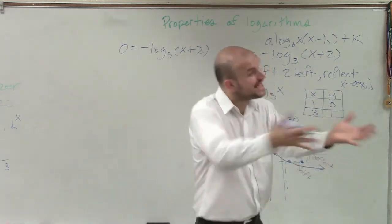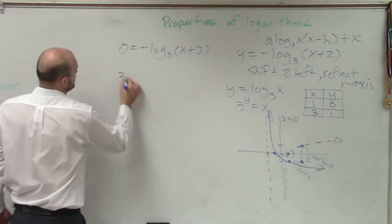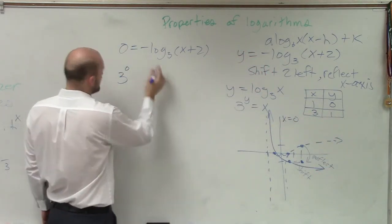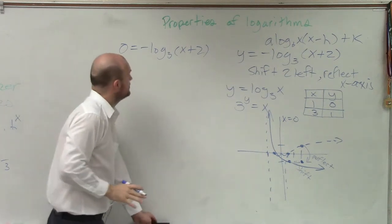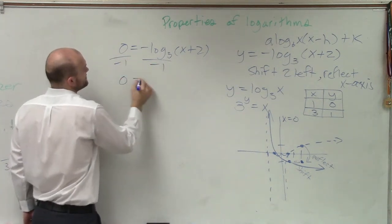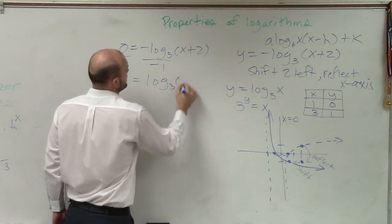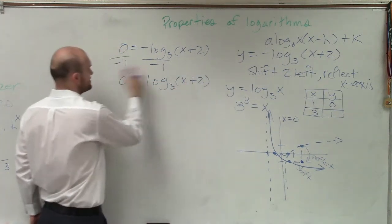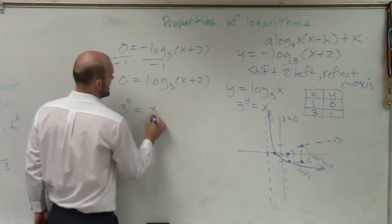But again, what can we do? What did we do last time? You put it into exponential form. So we have 3 to the 0. I'm sorry. Before we put it in exponential form, let's get rid of this negative. So we have 0 equals log base 3 of x plus 2. Exponential form, 3 to the 0 equals x plus 2.